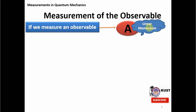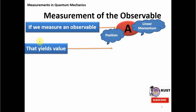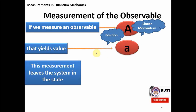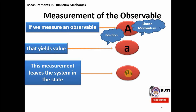The linear momentum of this electron is a physical observable, and we can also have the position of this electron, which is also a physical observable. When we make a measurement of this physical observable — let us say of linear momentum — what we get is a value which we call an eigenvalue, let us say this eigenvalue is A. Now, this measurement leaves the system in a new state denoted by φ_A, and the system will remain there unless and until a new measurement is made.